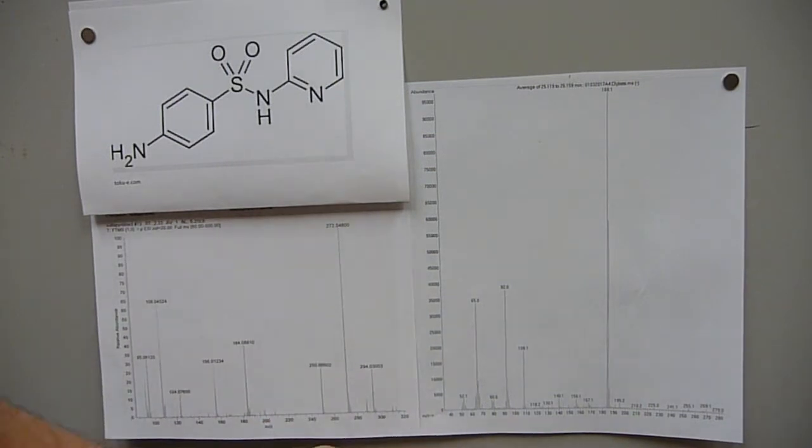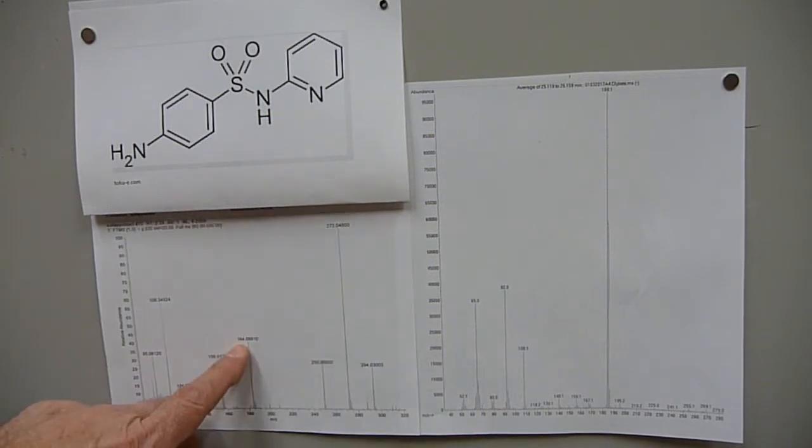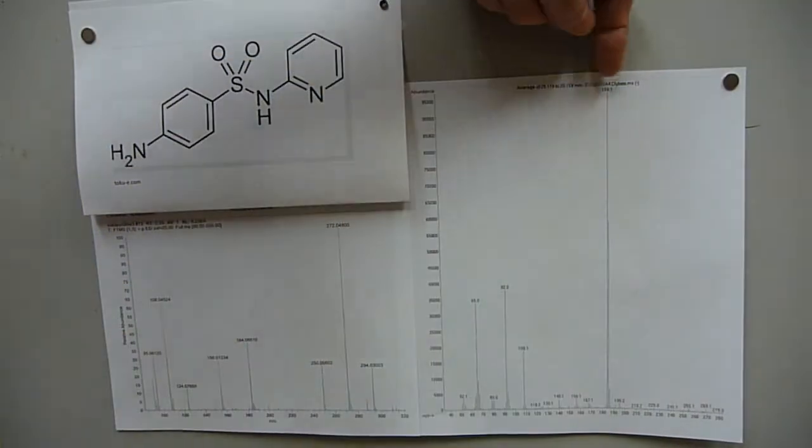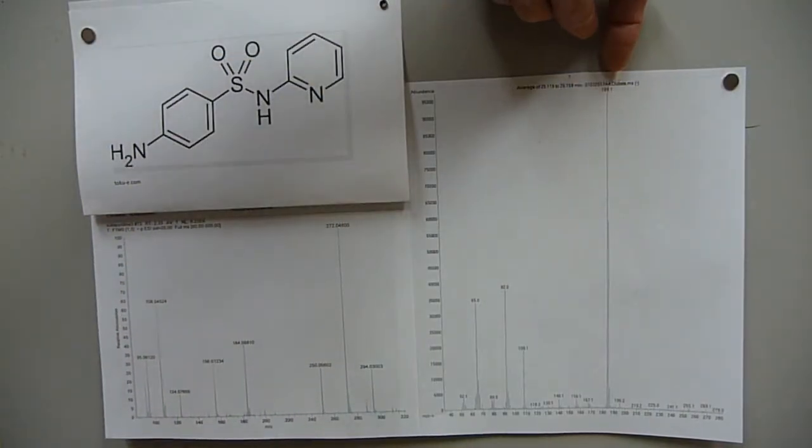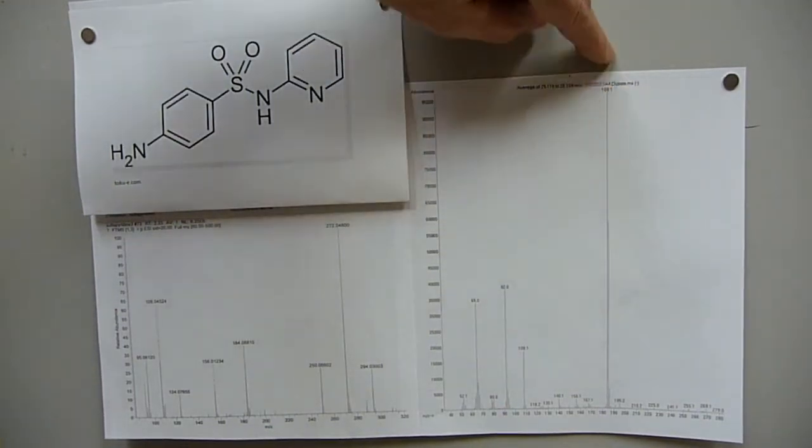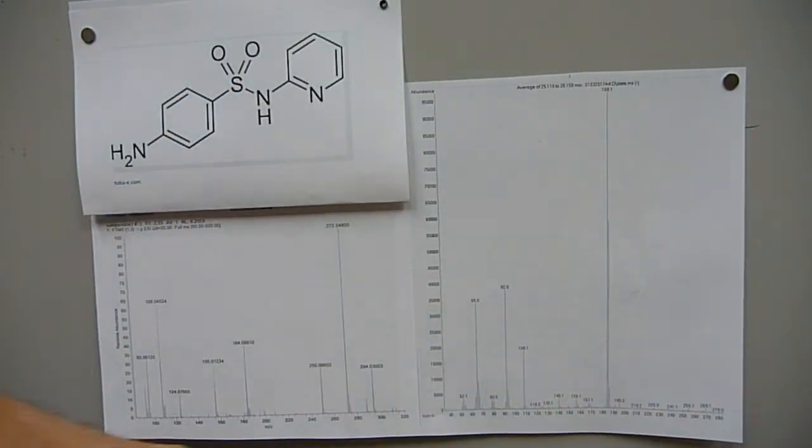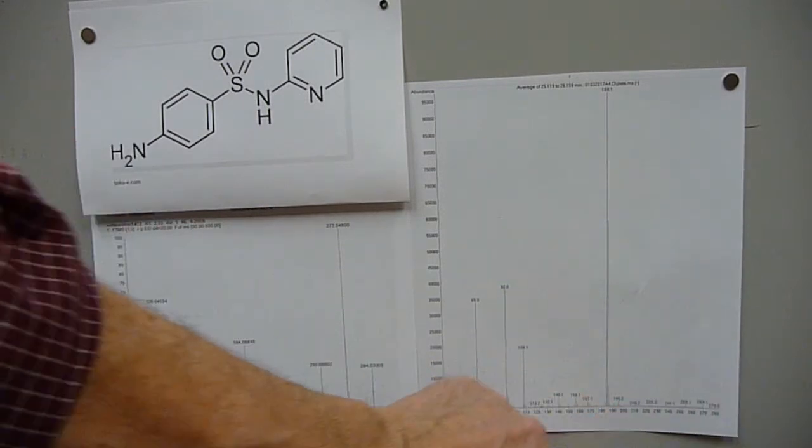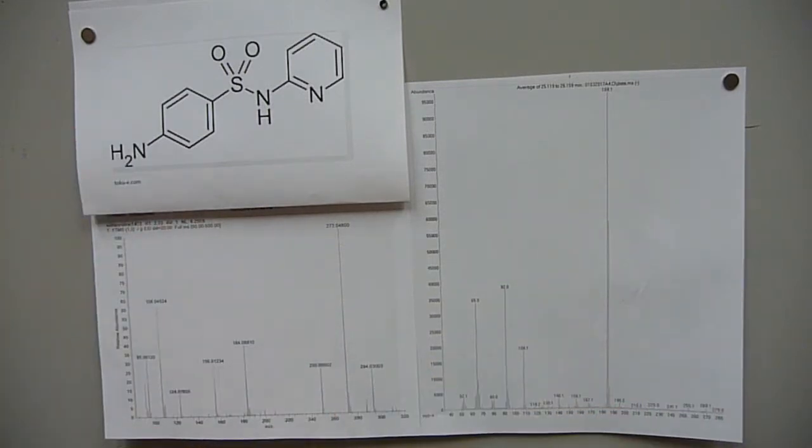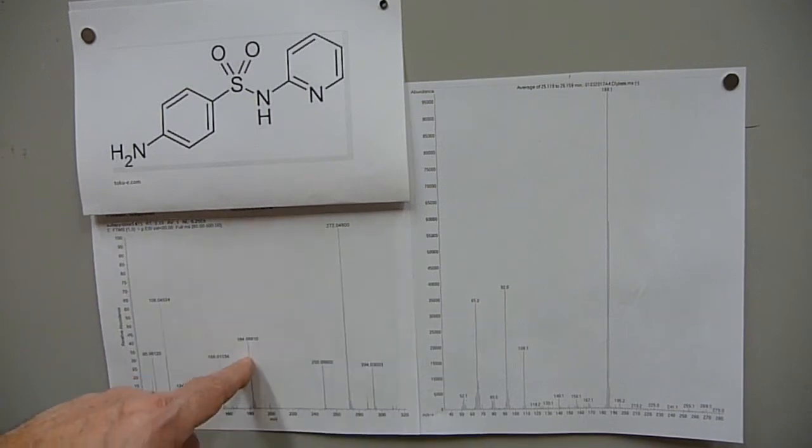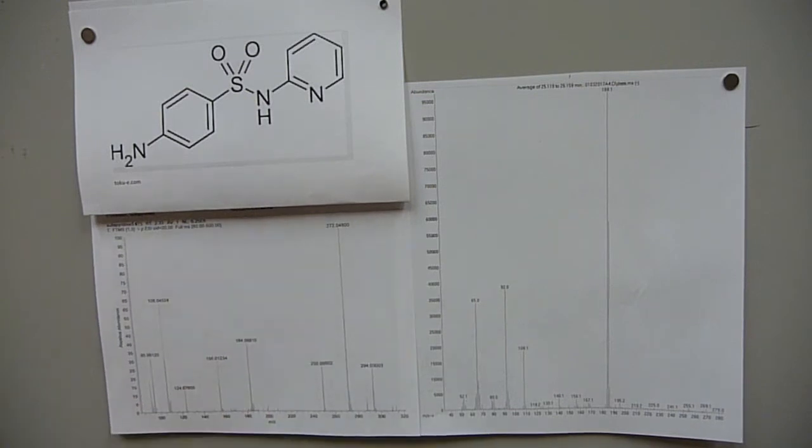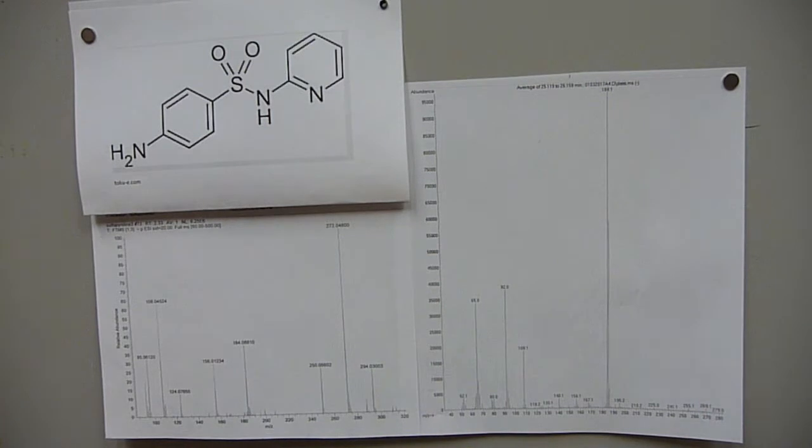The reason that I'm interested in the sulfapyridine is that this 184 here, that is the base peak highest M over Z. Well, there's also 185. But this is in the EI. This is the GC mass spec EI spectrum. There is no indication of a molecular ion. This is just background, GC background crud. So trying to get more information about this 184 was the whole purpose for taking a look at sulfapyridine.